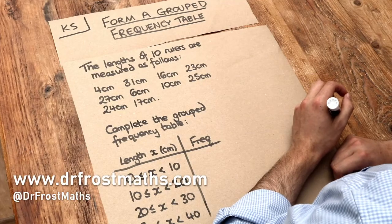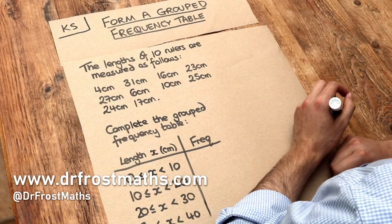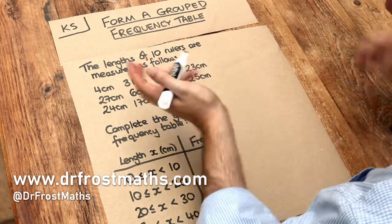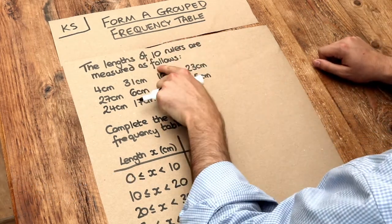Hello and welcome to this Dr. Ross Maths key skill video on forming a grouped frequency table. So we've got this question here, the lengths of 10 rulers are measured as follows.